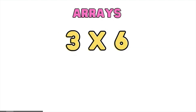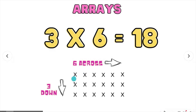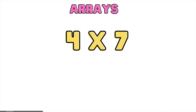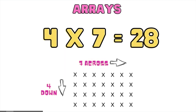Let's try another example: 3 times 6. 3 X's going down, 6 X's going across — 3 going down, 6 across. Next, 4 times 7 — 4 going down, 7 going across. And you will get the answer 28.